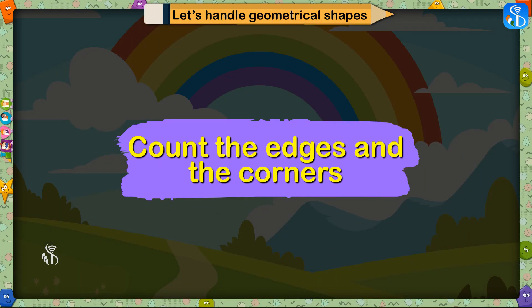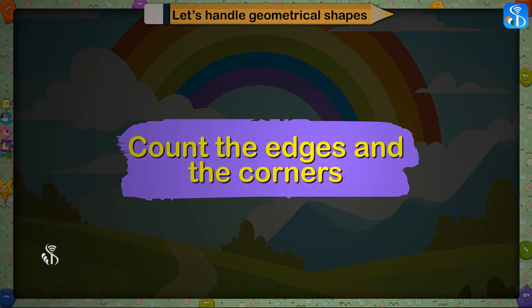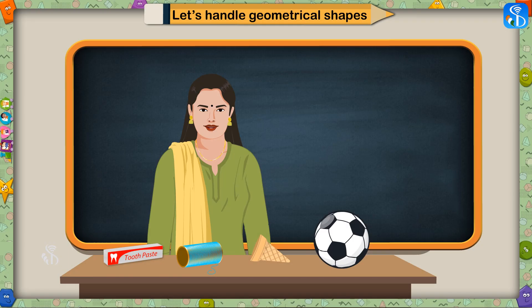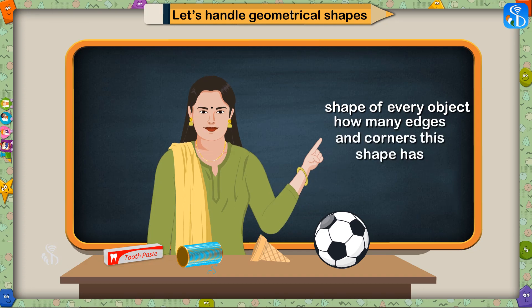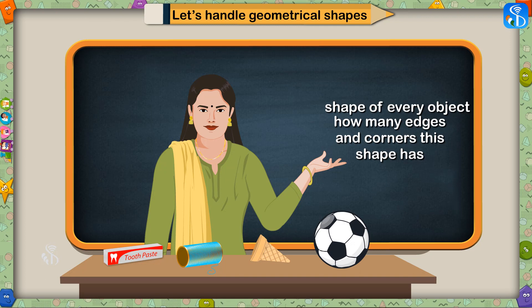Count the edges and the corners. Children, here we have some objects before us. You have to tell me the shape of every object and how many edges and corners this shape has. We have to complete this chart over here.